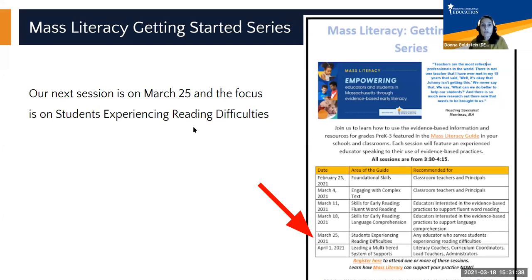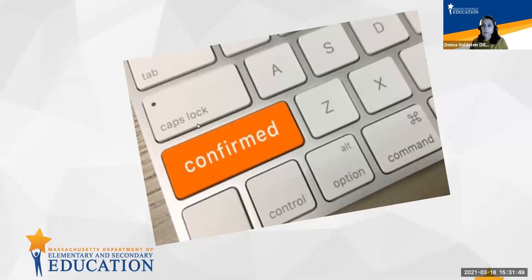The remaining two focus areas include students experiencing reading difficulties and leading a multi-tiered system of support. Several participants have asked about PDPs for these sessions — we do not give PDPs. However, tomorrow you will receive email confirmation of your attendance for each 45-minute webinar that you have attended.